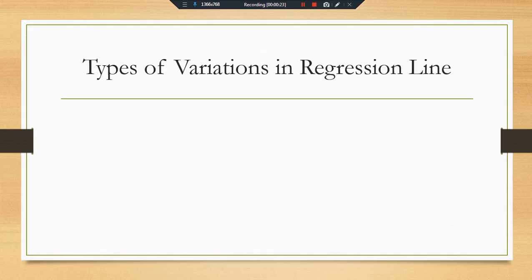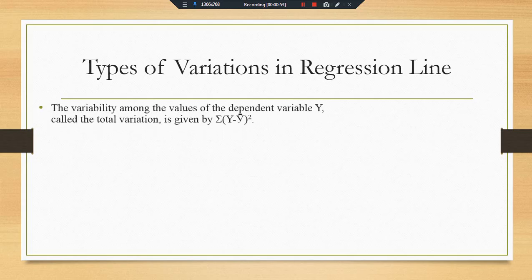Before the detailed discussion of R-square or coefficient of determination, let's discuss the types of variation in the regression line. Normally there are three types of variation in the regression line: the first one is total variation, unexplained variation, and explained variation. But the literature suggests that only one variation is considered for the regression line, and that is the total variation.